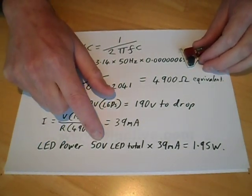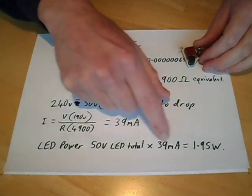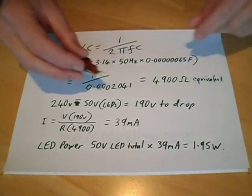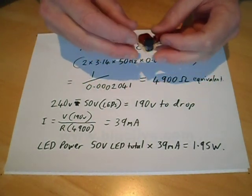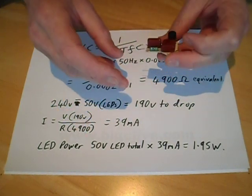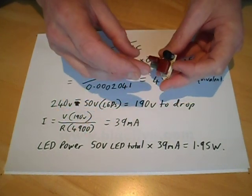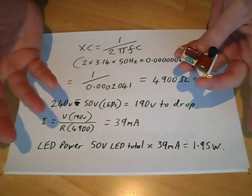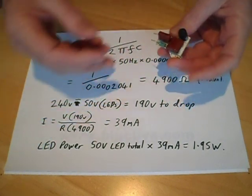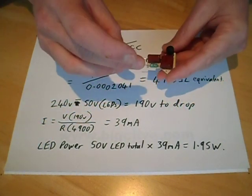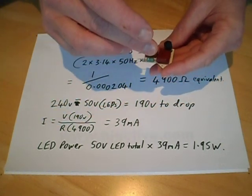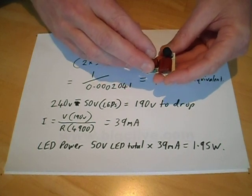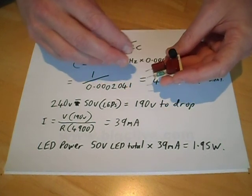The LED power, then, is the 50 volt LED total, times 39 milliamps, comes to roughly 1.95 watt, which, given that the LED lamp is rated 2 watts, is actually really close. And they've fine-tuned the power, effectively, of the lamp, by the choice of these capacitors. If you used lower power capacitors, effectively less current would flow through LEDs, there'd be less power dissipated. But to get fairly accurately the 2 watts, they've just combined these two specific values, the 470 nF and the 180 nF to give the 650 nF.